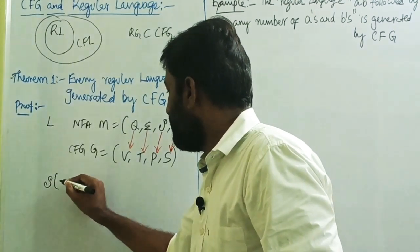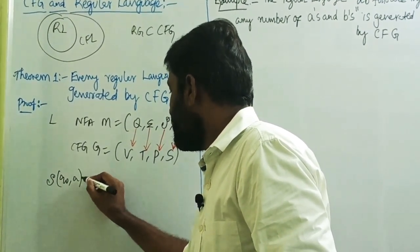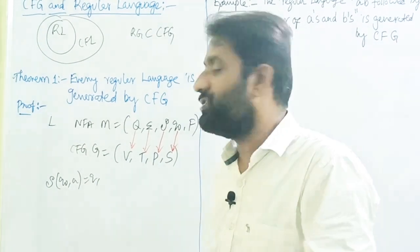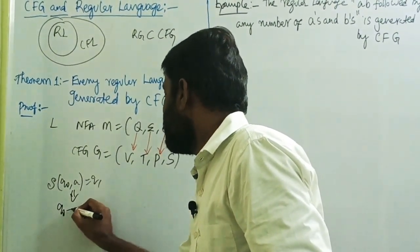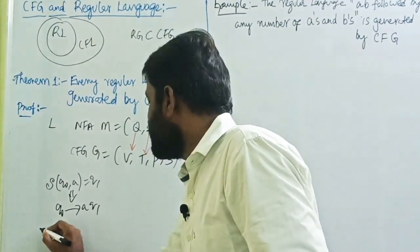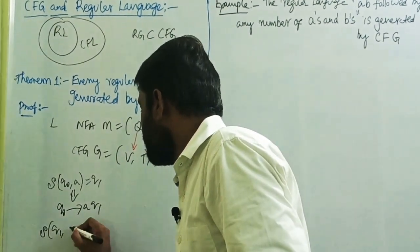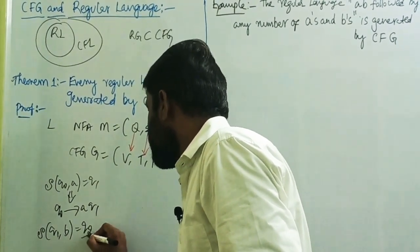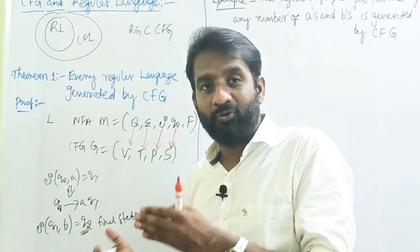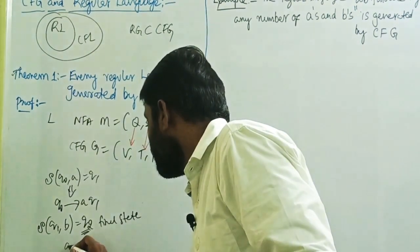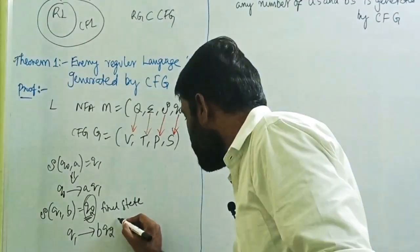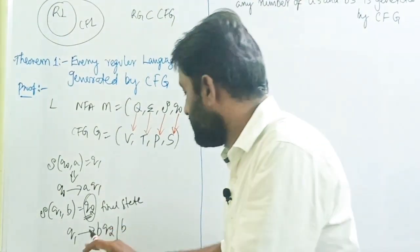For example, if we have a transition δ(Q0, A) = Q1, the equivalent production is Q0 → AQ1. For another transition δ(Q1, B) = Q2, the equivalent production is Q1 → BQ2. Since Q2 is a final state, we add one more production: Q1 → B.